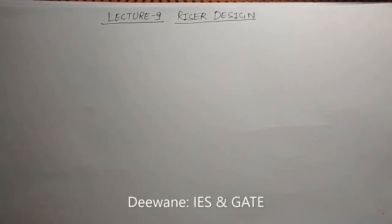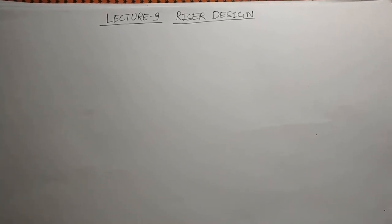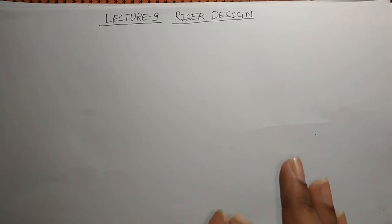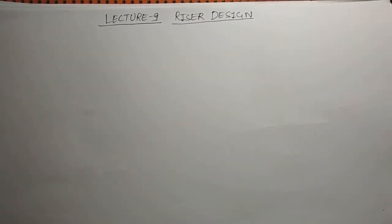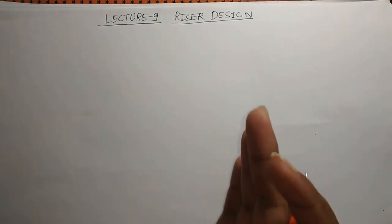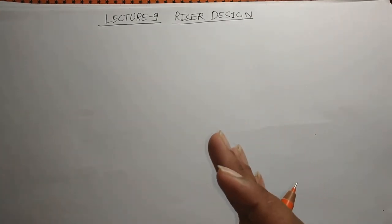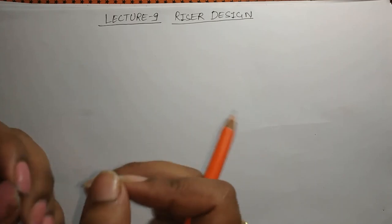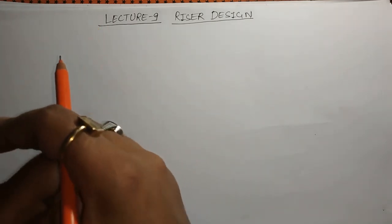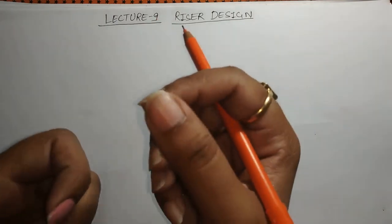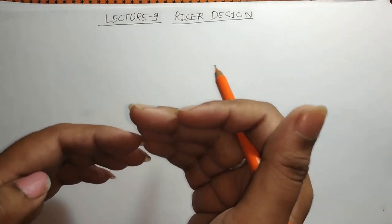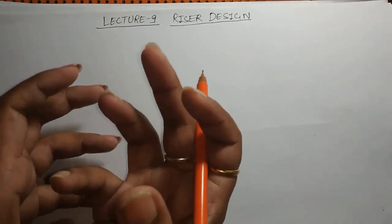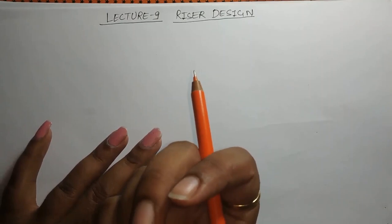We'll start lecture number nine, which is riser design. We are going to see the design of the riser and will also be solving questions after the complete design is covered in one or two lectures. Before starting the design of the riser, we must first understand what a riser is. The riser is an assembly attached above the casting so as to fulfill the demand of the volume that shrinks at the time of solidification.